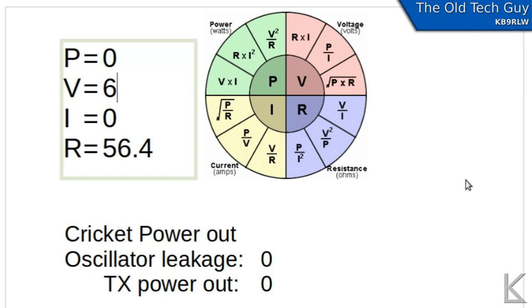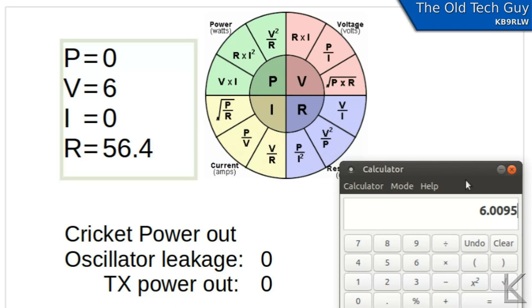So now that I've got my RMS or average voltage I can calculate the power. So for power we take voltage squared divided by resistance. So we'll take 6 times 6. So 6 squared is 36 divided by 56.4 and the power that the cricket was pushing into that dummy load is 638 milliwatts.